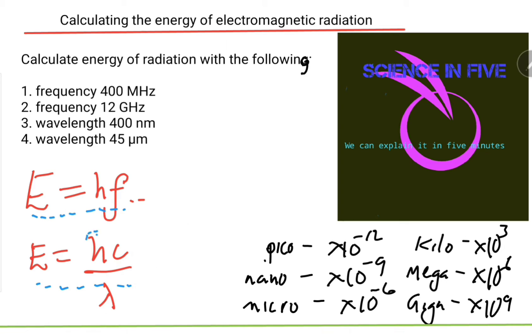Two important constants in both equations are h, which represents Planck's constant with a value of 6.6 times 10 to the minus 34, and c, which represents the speed of electromagnetic radiation with a value of 3 times 10 to the power 8 meters per second.